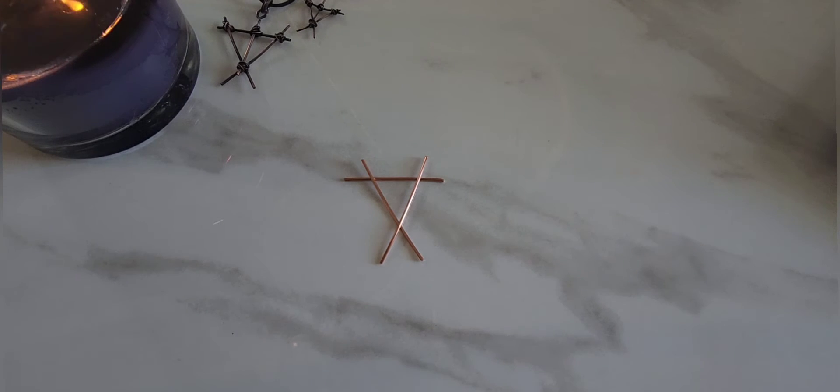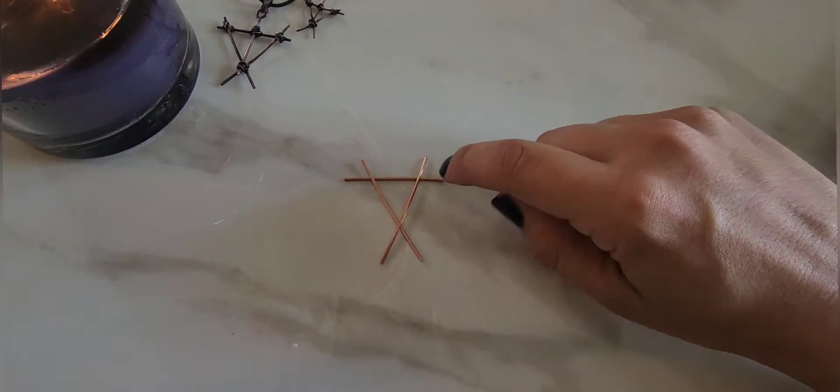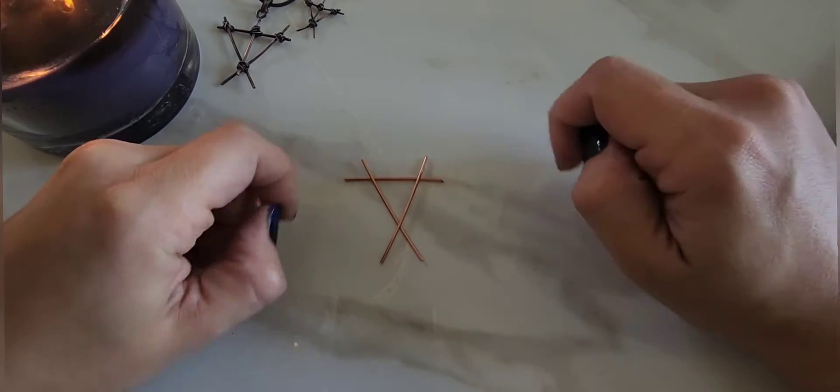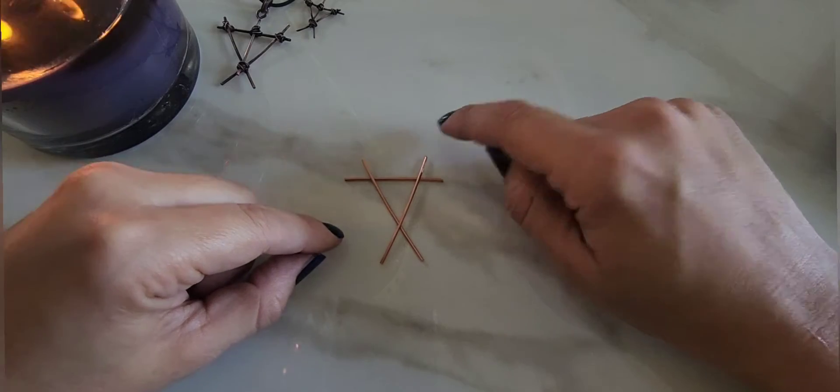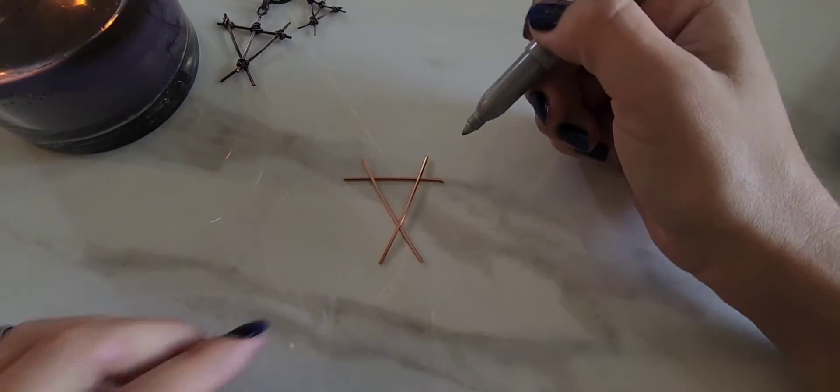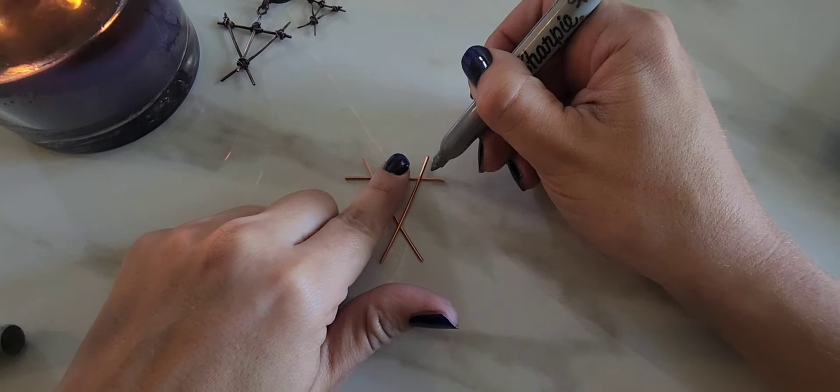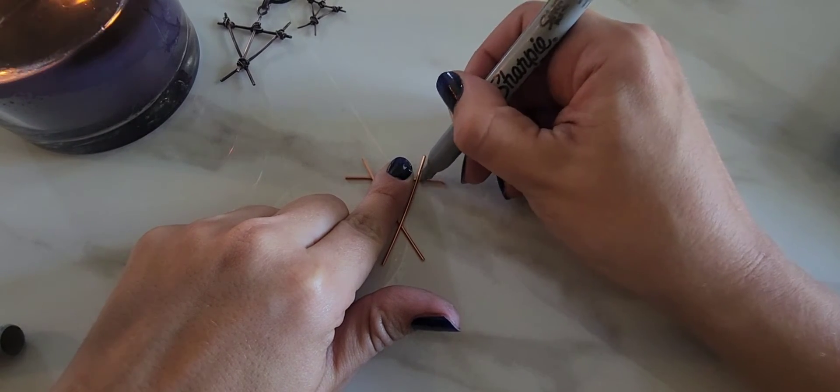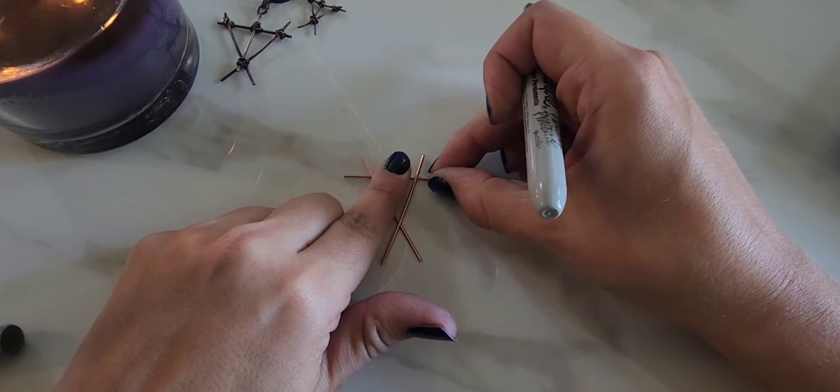All right. So once we have that kind of eyeball, you could, you actually, I don't have a marker with me, but we could mark with a marker right where, oh, maybe I will go get a marker. One second. Yeah, it might be a good idea to kind of mark where you want your wires to crisscross.